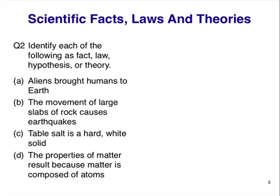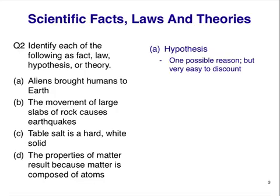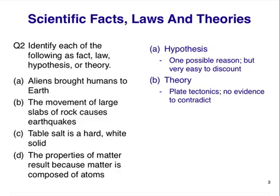Ready? The first statement is a hypothesis, because it is one possible way that humans developed on earth. Actually, it's not a good hypothesis, since there is no evidence that it is true. The second statement is a theory. It offers an explanation of what causes earthquakes, and there is no evidence that contradicts the idea that the movement of the earth's crust causes earthquakes.